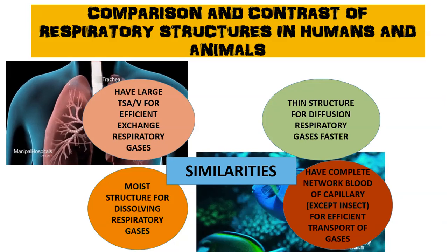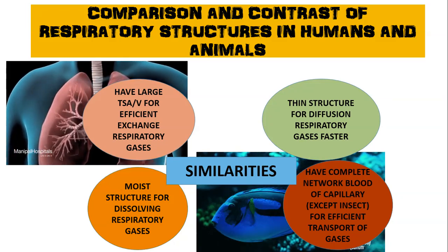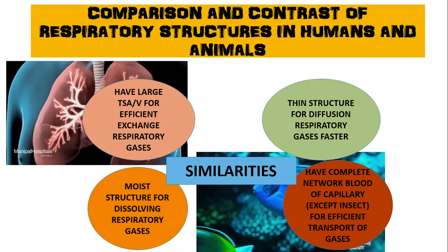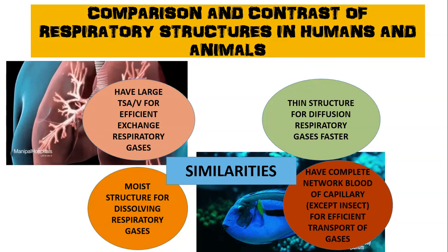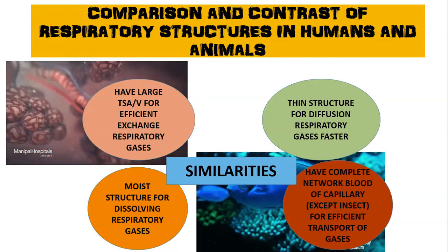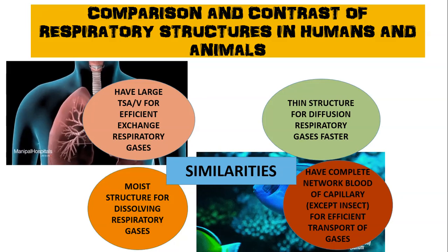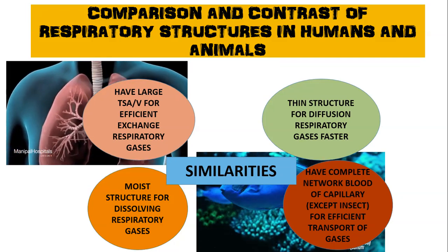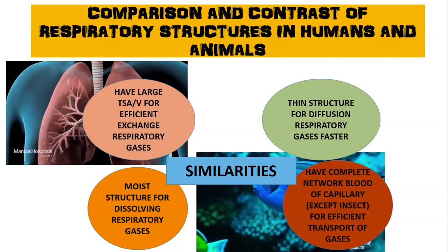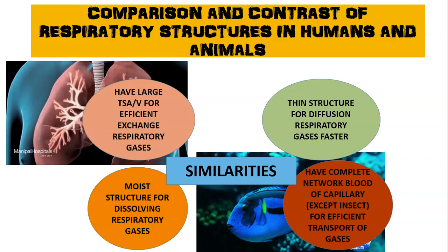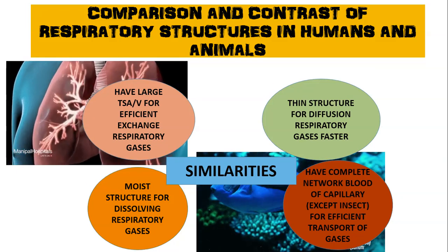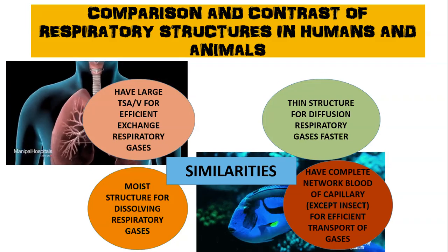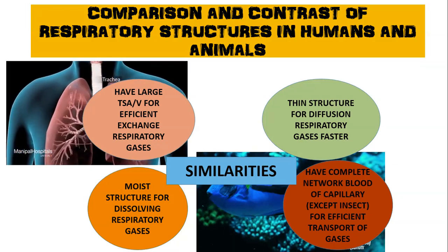Now we compare and contrast the respiratory structures in humans and animals. The similarities between all structures are: all have a large total surface area to volume for efficient gas exchange; all have moist surfaces for dissolving gases; all have thin structures to make diffusion of gases faster; and all have a network of blood capillaries, except insects.